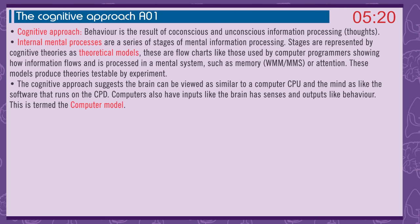The cognitive approach suggests behaviour is a result of conscious and unconscious information processing — thoughts. Internal mental processes are a series of stages of mental information processing, represented by cognitive theories such as theoretical models — flowcharts showing how information flows in mental systems such as memory, the working memory model, multi-store model, or attention. These models produce theories testable by experiment. The cognitive approach suggests the brain can be viewed as similar to a computer's CPU, with the mind as the software — the computer model.